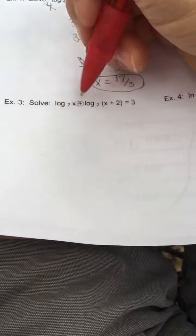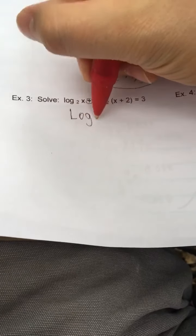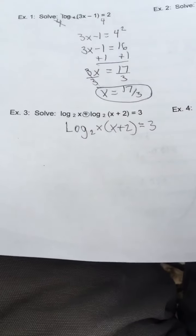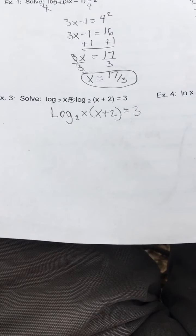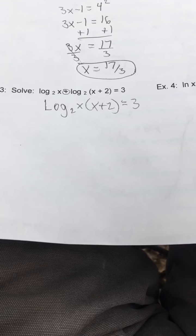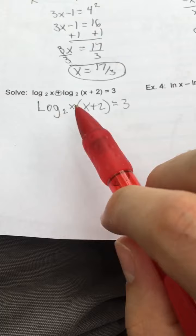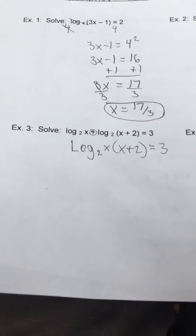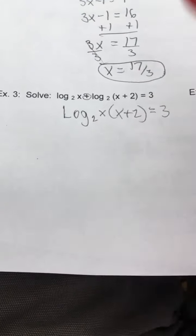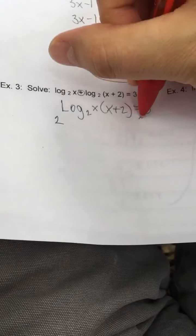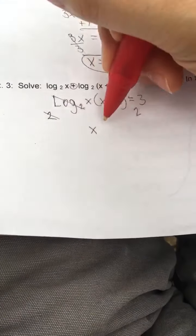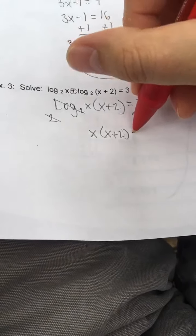Now example three, what's different about this problem? I have two logs on the same side of the equal sign. So I'm going to have to use those properties of logs that we learned last week. I need to combine these into one log. Remember if you have log of something plus log of something, if it's addition, you can turn it into what kind of problem? Multiplication. I can rewrite this as log base two of x times x plus two equals three. If that just blew your mind, go back and look at that lesson we did last week on expanding and condensing logarithms.